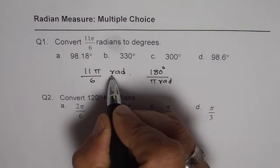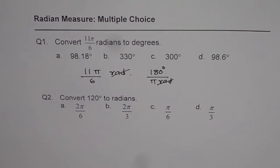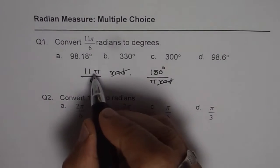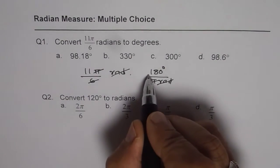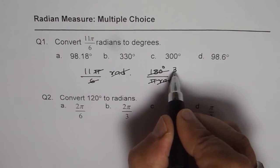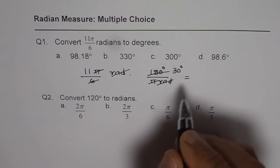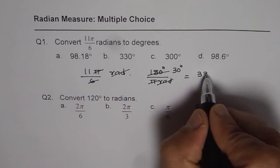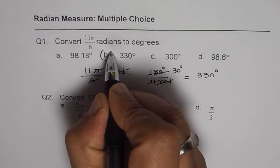Now, radians, radians cancel out. What you get is in degrees. Do you see that part? π and π will cancel out and 6 will go 3 times 30, 30 degrees. 11 times 30 is our answer, which is 330 degrees. So option B is the right option.